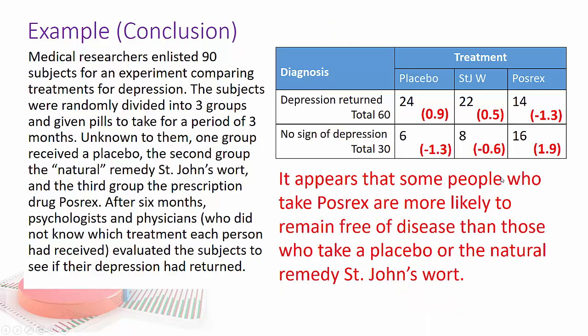So if you look at it, it appears that people who take Posrex, first of all, they're more likely to, the contribution here is positive in terms of no signs of depression, and it's negative in terms of depression. So it seems that these folks are more likely to remain free of disease than those who take a placebo or St. John's natural wort.